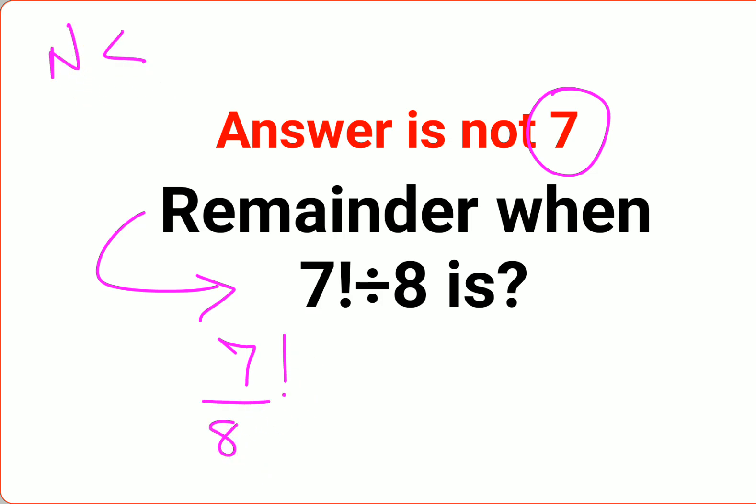When the numerator is smaller than the denominator, at this point the remainder becomes the numerator, which is true. 1 divided by 3, the remainder is 1. 4 divided by 9, the remainder is 4. Okay, that is true.